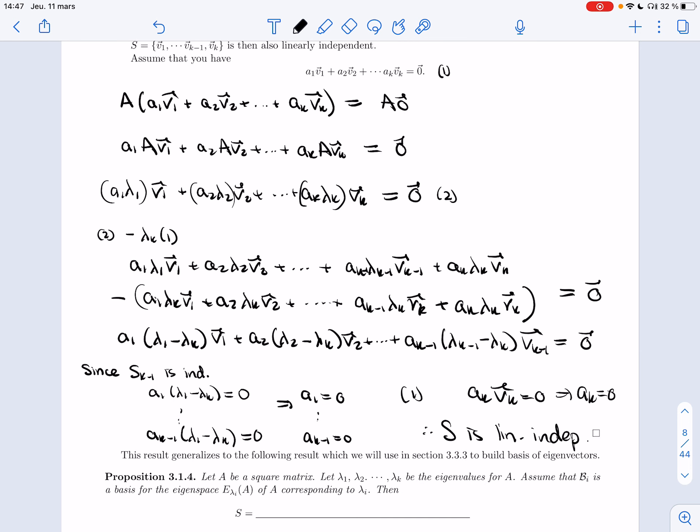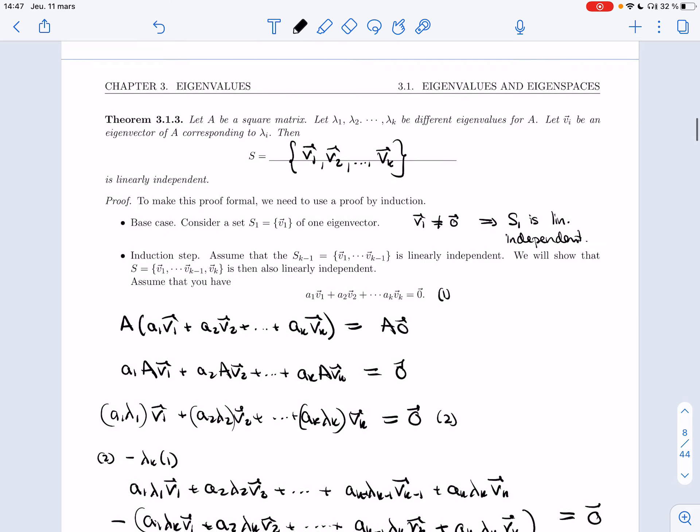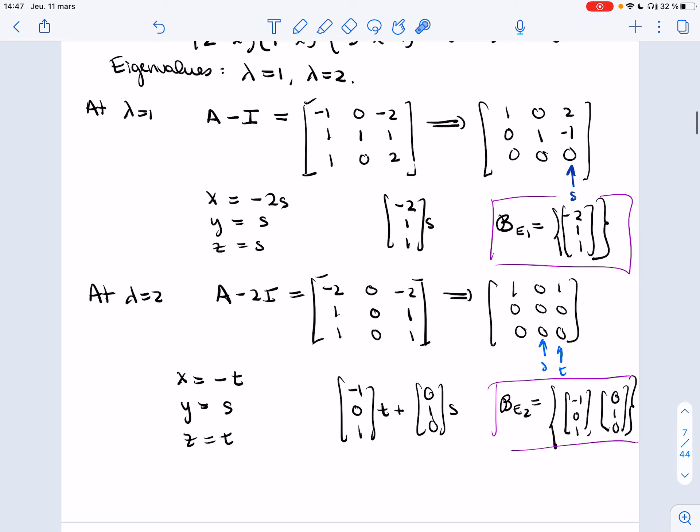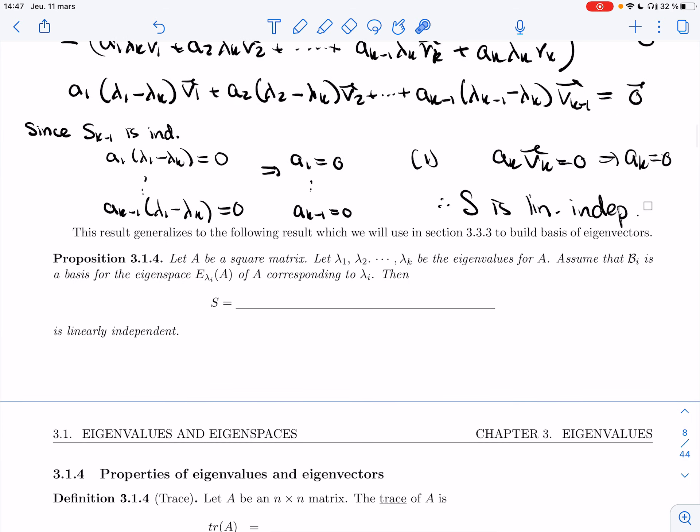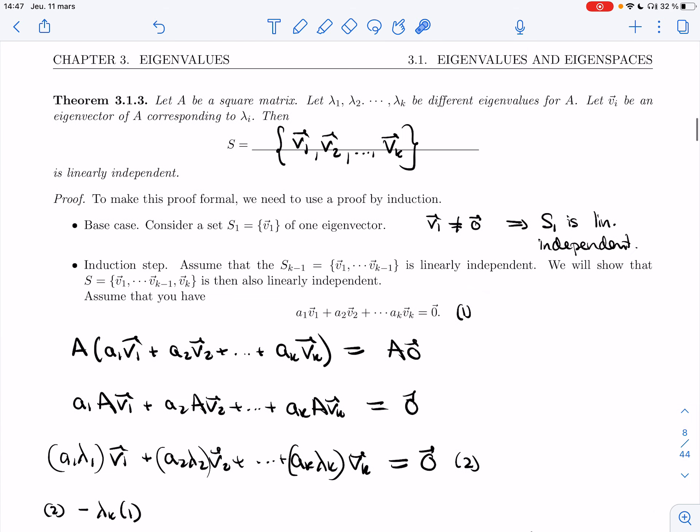This result is not true if you allow the same eigenvalue multiple times. Of course, because if you look at what we have here, we have infinitely many eigenvectors for that eigenvalue, but the subspace is only dimension one, so as soon as you add a second one, it's dependent. All right, so this result, which is kind of nice, but is a bit restrictive, because we assume that we are using only one eigenvector for each eigenvalue,